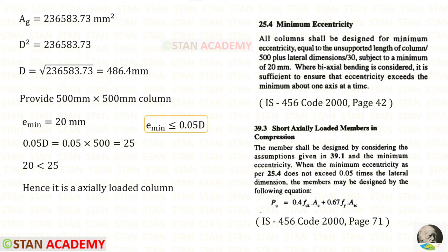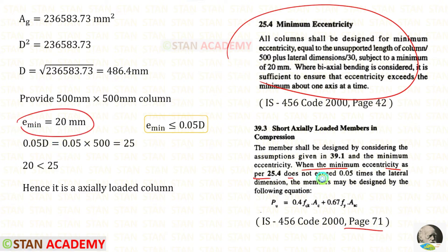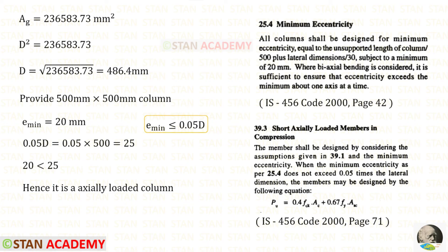Now let us verify it is an axially loaded column. Opening the codebook page number 42, all columns shall be designed for minimum eccentricity equal to the unsupported length divided by 500 plus the lateral dimension divided by 30, subject to a minimum of 20 millimeter. Since the unsupported length is not given, we take the minimum eccentricity as 20 millimeter. From page number 71, the minimum eccentricity as per clause 25.4 should not exceed 0.05 times the lateral dimension. Here both lateral dimensions are 500 mm, so 0.05 into 500 equals 25 mm. Since 20 mm does not exceed 25 mm, this is an axially loaded column.